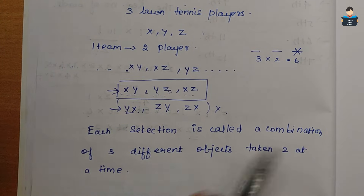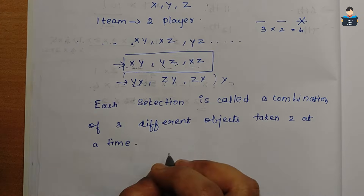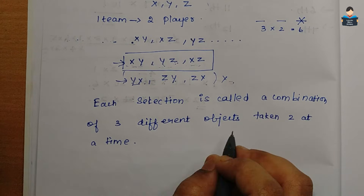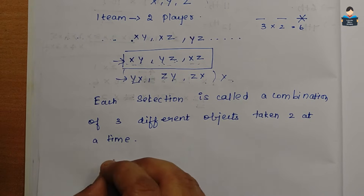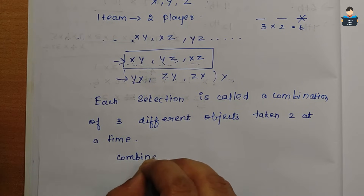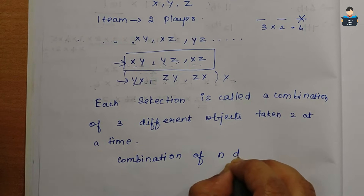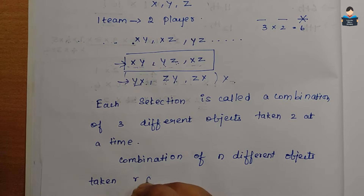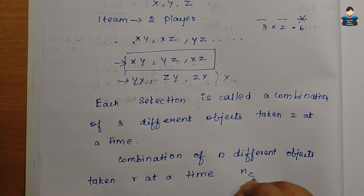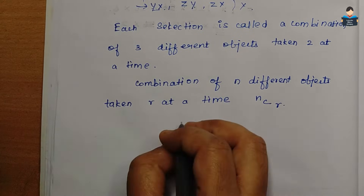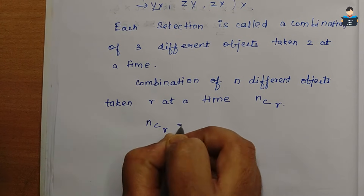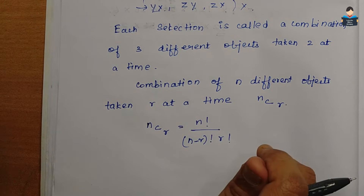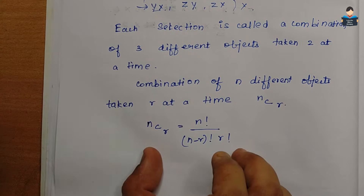Now, how do we define the number of combinations in general terms? The combination of n different objects taken r at a time is denoted as nCr. The formula for combinations is: nCr = n! divided by (n−r)! into r!. This is the combination formula.